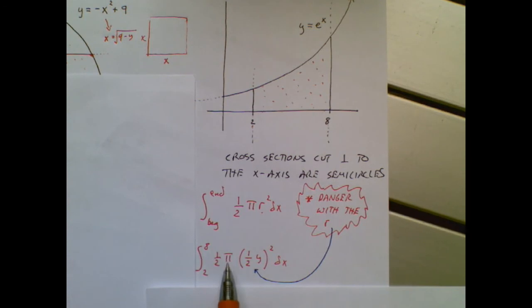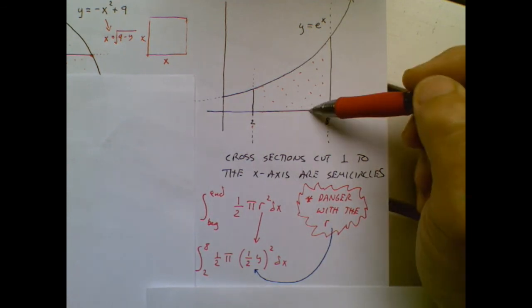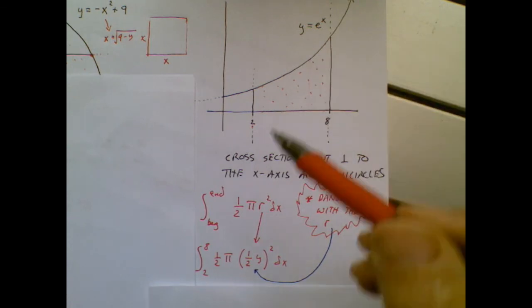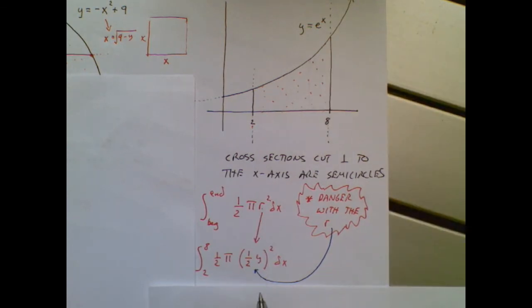We talked about the beginning and the end. 1 half pi, nothing to see here. But look what happened with the radius. You would say, wait a second. I think the radius would be this entire distance, which is a y value.